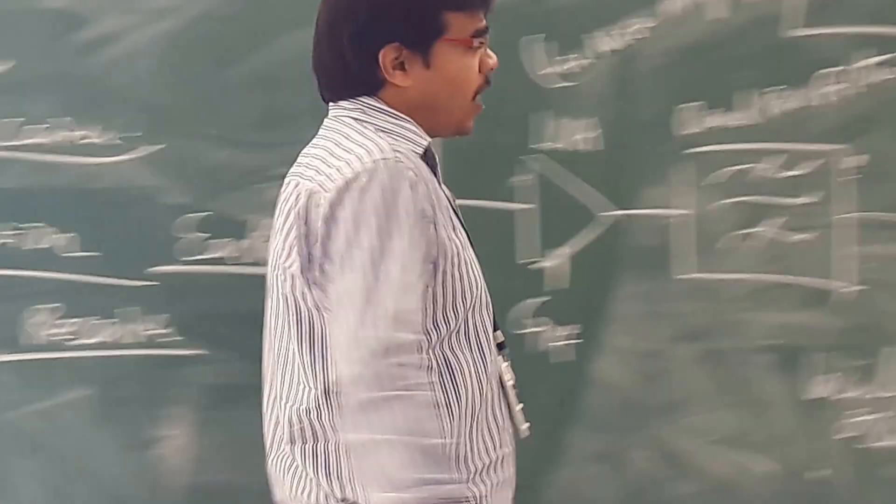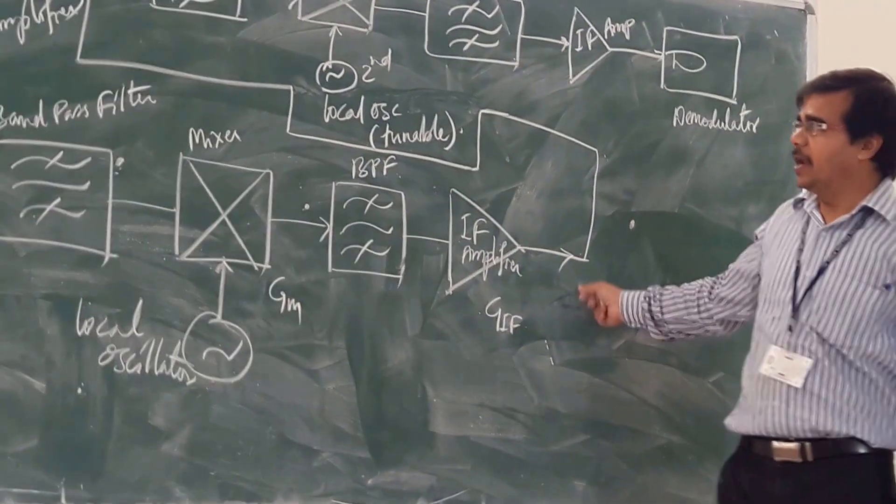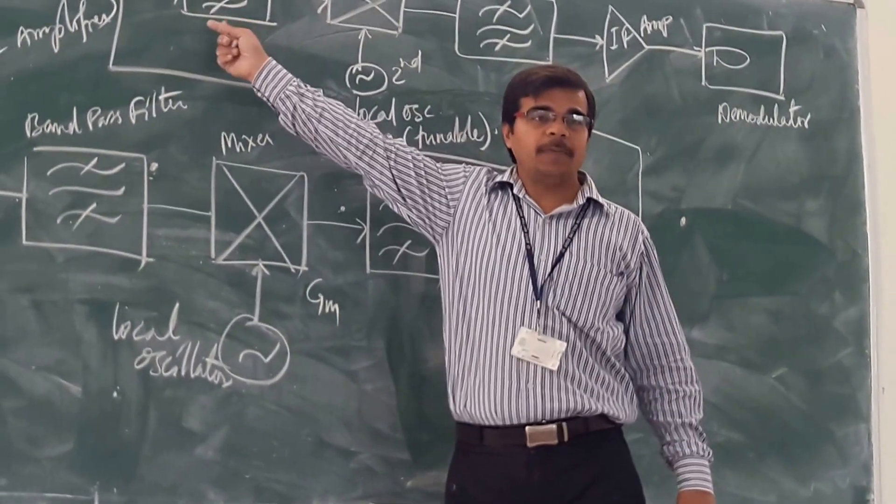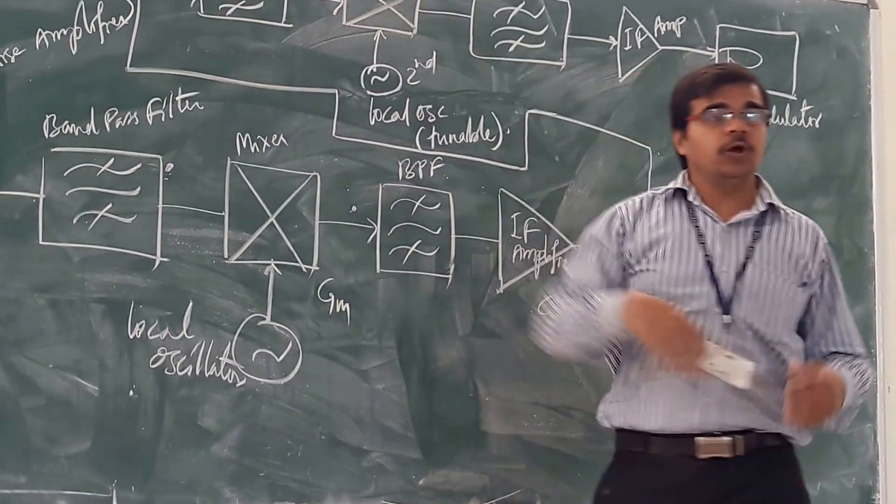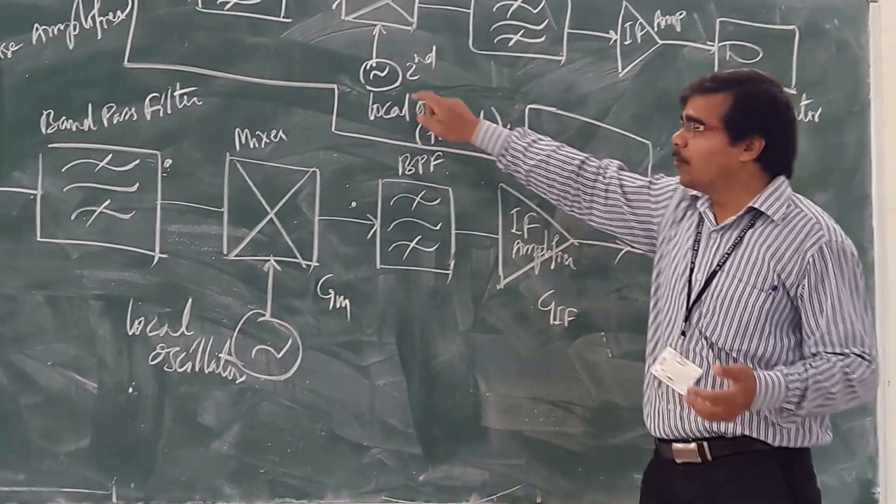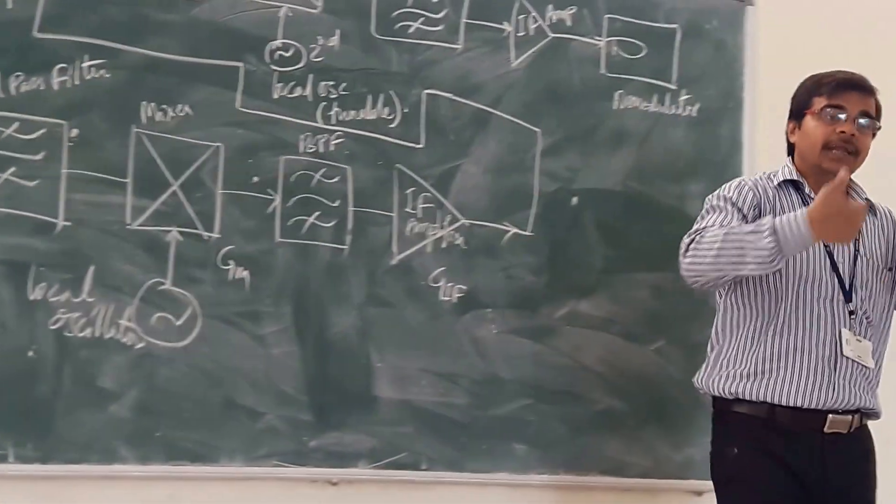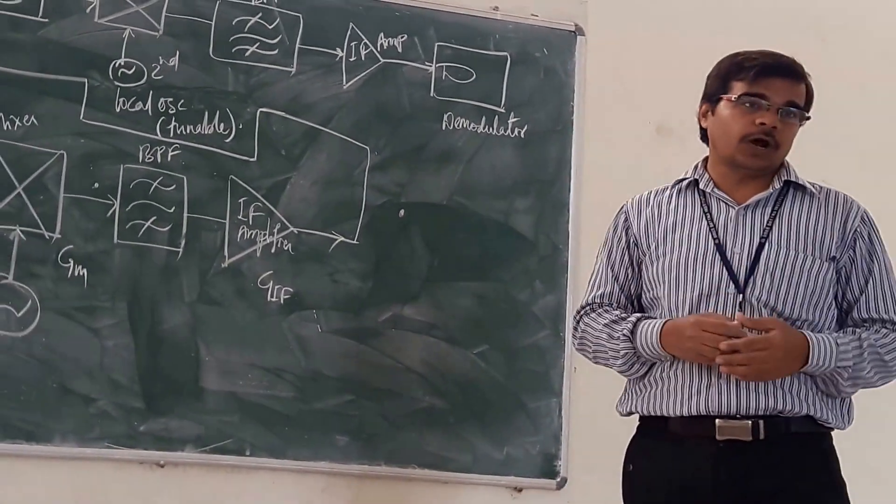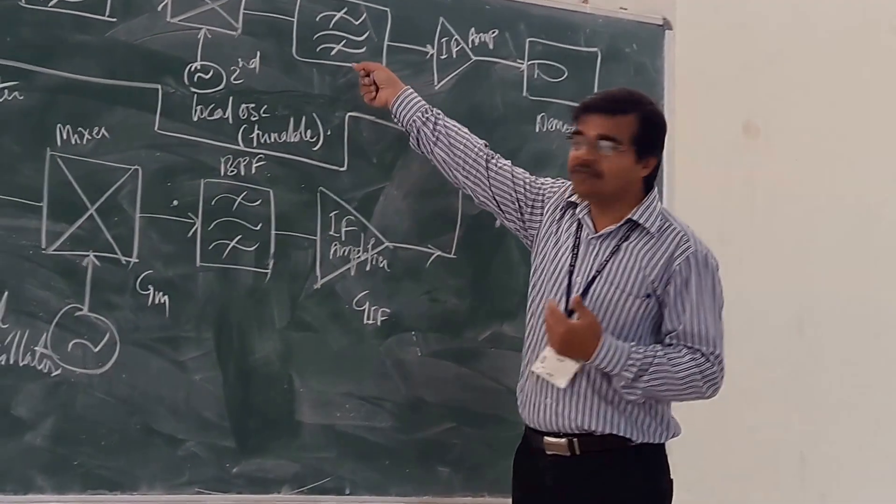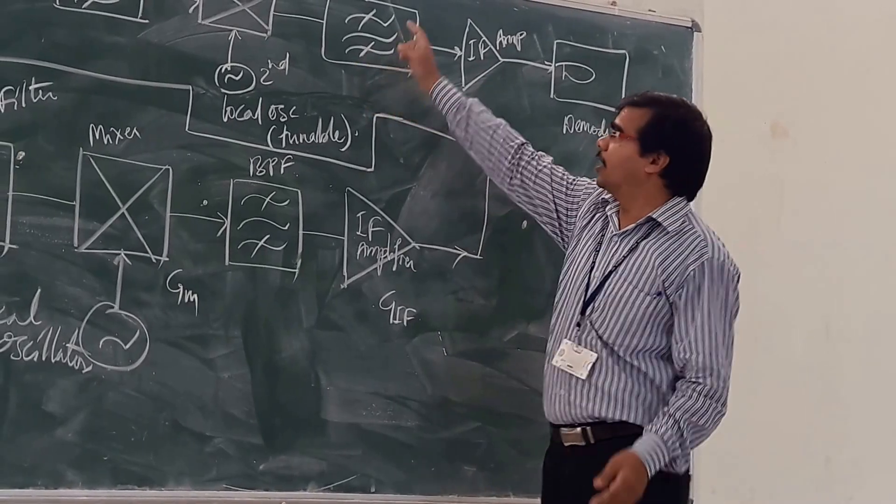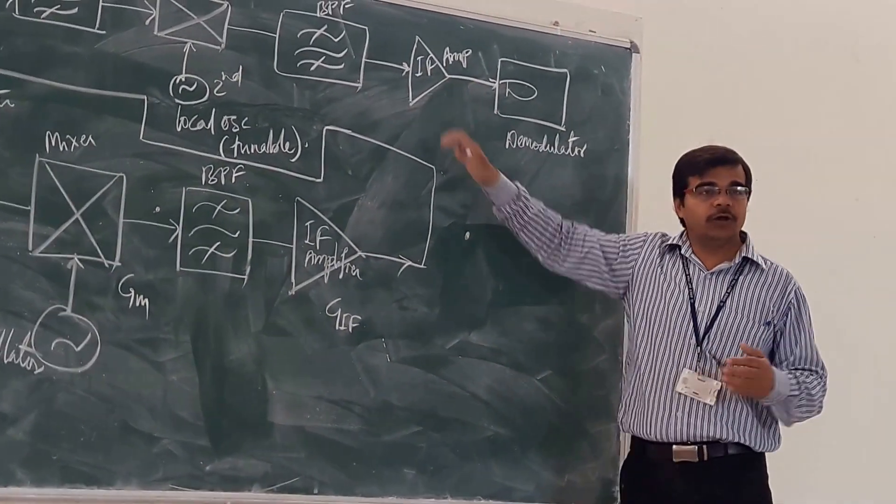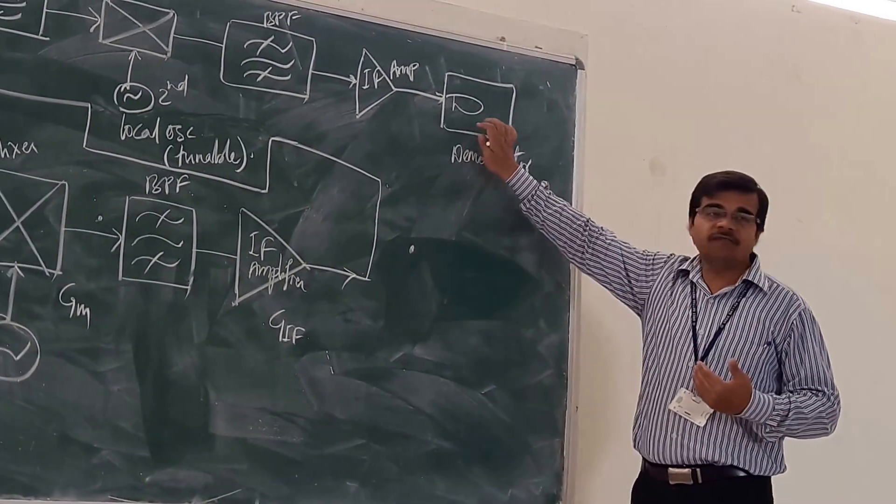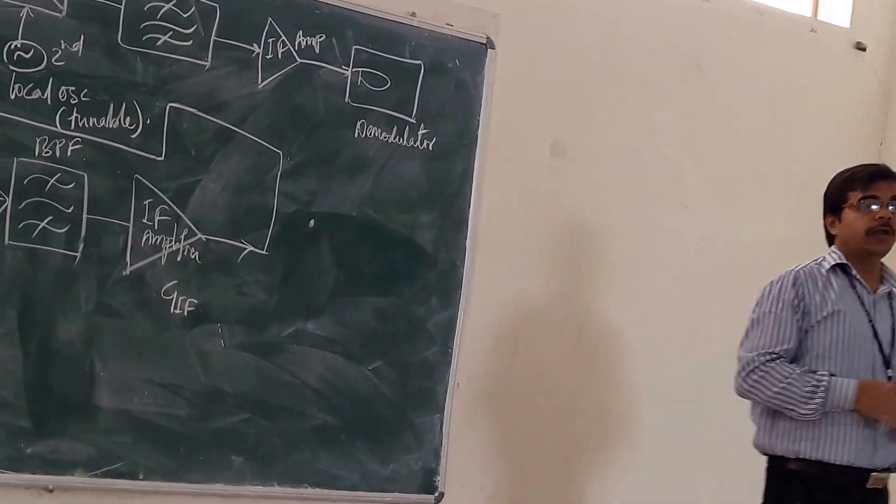Here, whatever you are having this IF amplifier, we are passing it to your band pass filter and we are going for your second mixer and we are going for your second local oscillator. This local oscillator is a tunable local oscillator. And then we are going for your band pass filter and again we are going for your second IF amplifier and finally it is going to be your demodulator.